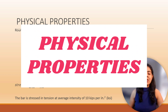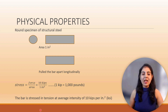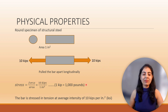The terms yield stress and tensile strength are used to describe the critical properties of structural steel and their response when an external load is applied. Here, a round specimen of one inch square cross-sectional area of any conventional length is clamped in a testing machine and a pull of 10 kips is applied. So the bar is stressed in tension at an average intensity of 10 kips per inch square.